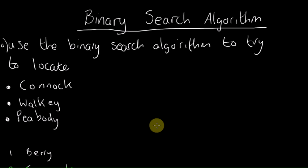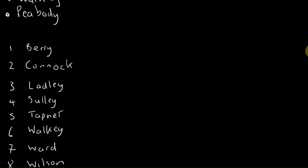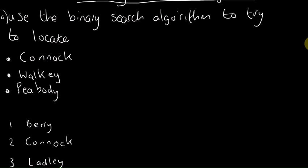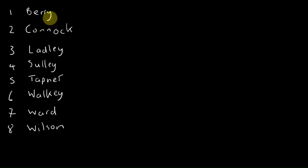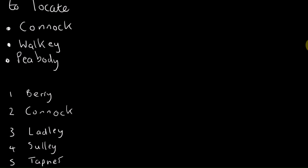Hello and welcome to more decision maths. We're going to be looking at the binary search algorithm. This is an algorithm to find, for example, a selection of names that are all in alphabetical order. The idea is that you'll get a question that will want you to find a particular name in a list and find where they are on the list, if they are on the list. The question is: use the binary search algorithm to try to locate Conic, Walkie, and Peabody.